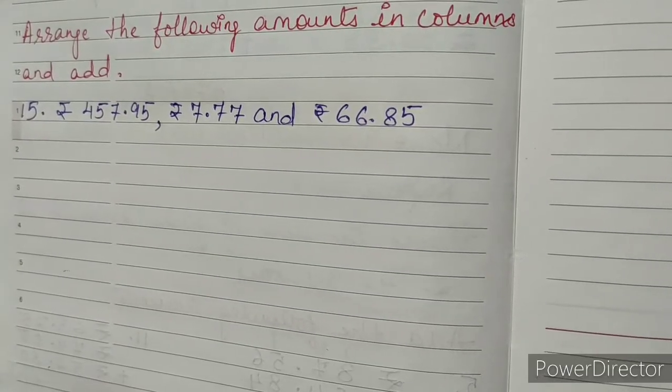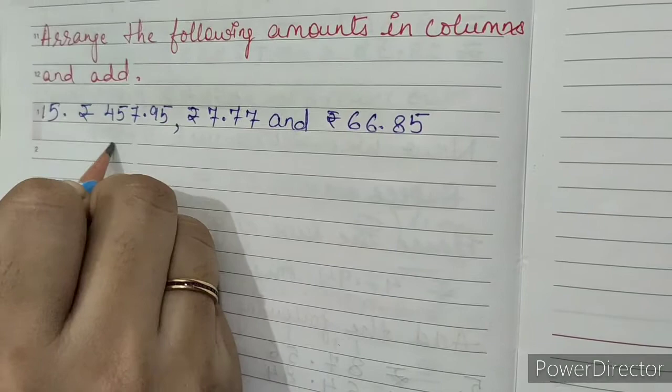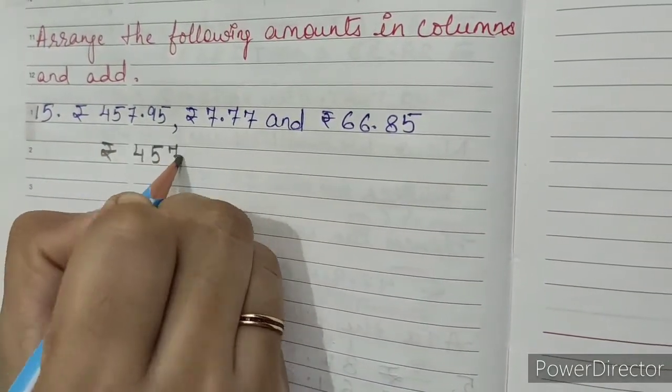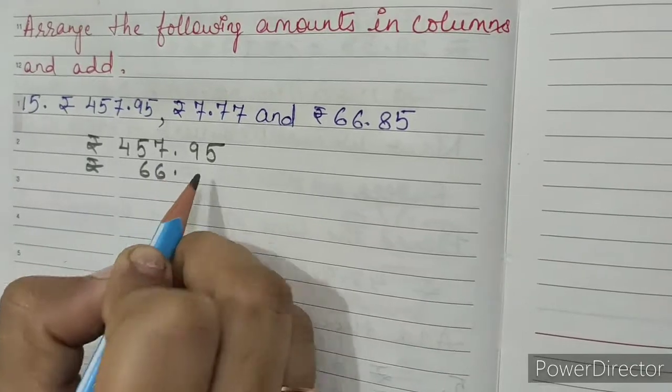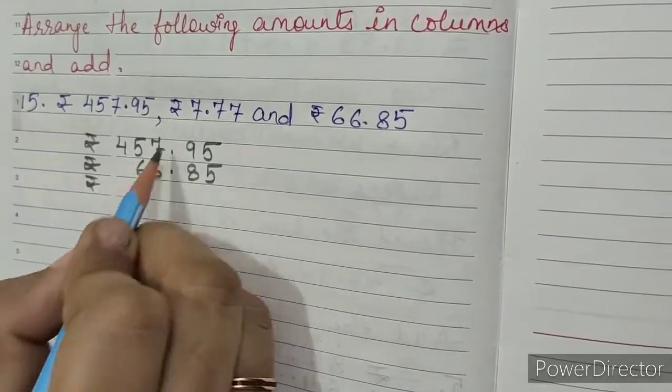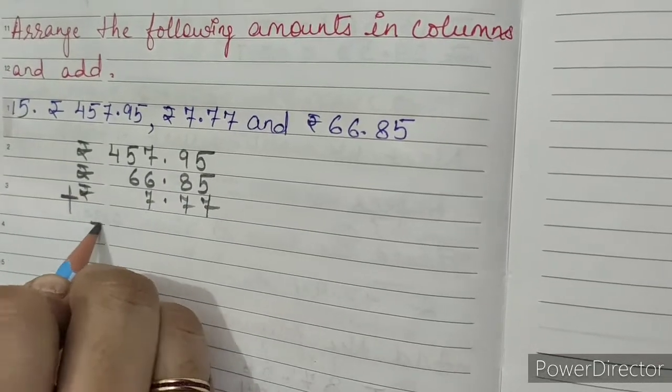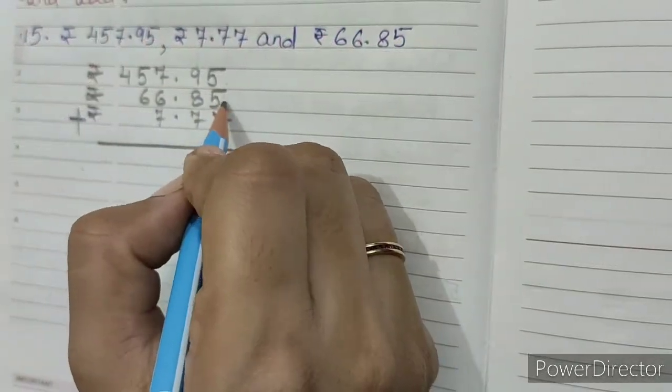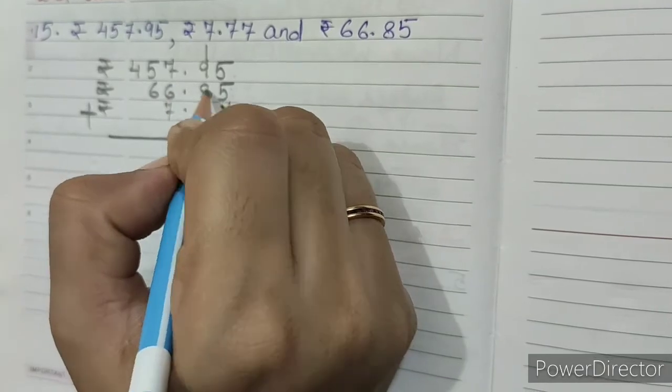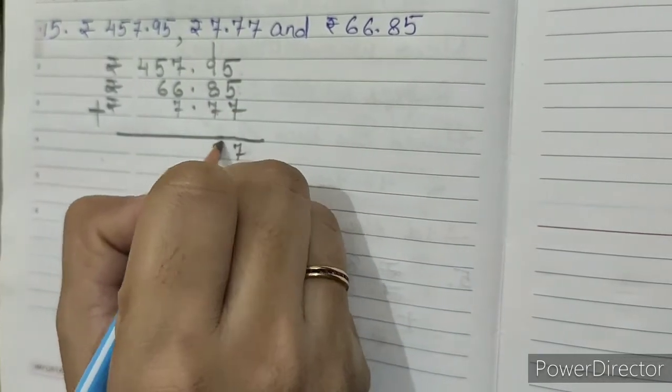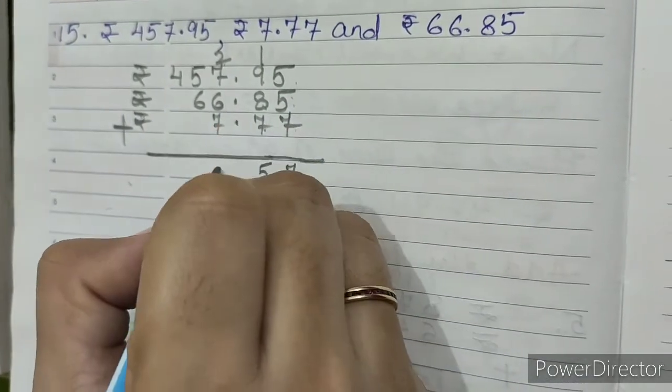Arrange the following amounts in columns and add. So first of all we have to arrange these values in columns. So rupees 457.95, then rupees 66.85, then rupees 7.77. Now we'll add: 5 plus 5 equals 10, 10 plus 7 equals 17, write 7 carry 1. 9 plus 1 equals 10, 10 plus 8 equals 18, 18 plus 7 equals 25, write 5 carry 2. 7 plus 2 equals 9, 9 plus 6 plus 7, we'll get 22.